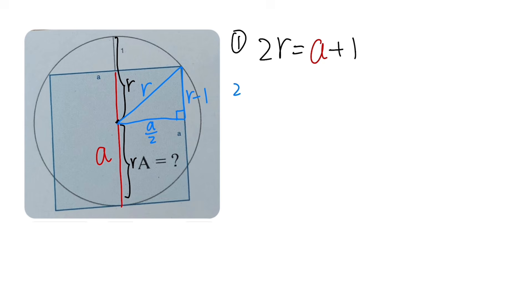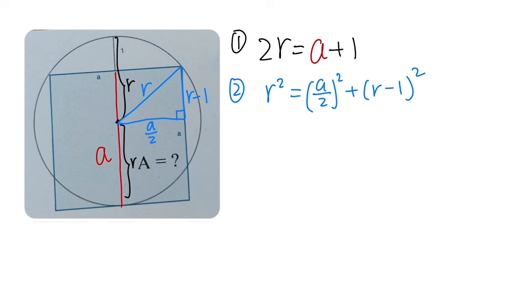Because we have a right triangle, we can apply the Pythagorean theorem, which gives us r² = (a/2)² + (r − 1)². Expanding, r² equals a²/4.